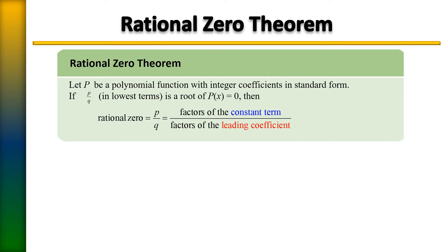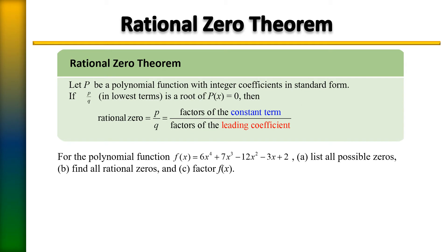So what is the constant? Let's take a look at our given polynomial: 6x to the 4th plus 7x cubed minus 12x squared minus 3x plus 2. To find the constant term when the polynomial function is in standard form — highest degree down to the lowest degree — the constant is always the last term, the number at the back end. In this case the constant term is 2, always a number with no variable attached.